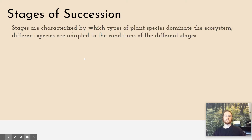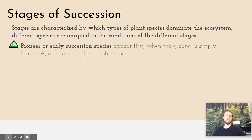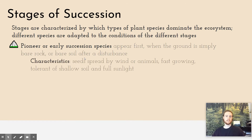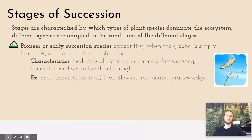It's important to understand that the stages of succession are marked by which types of plant species dominate the ecosystem during each stage, because different species are adapted to the different conditions that occur in each phase. We always start with pioneer or early successional species — the first species to appear in the area. They are able to become established either on bare rock in primary succession, or in recently disturbed soil in secondary succession. They share characteristics: they are dispersed by the wind, or by animals who may eat the seeds and disperse them in their waste, or seeds may get stuck to the animal's fur.